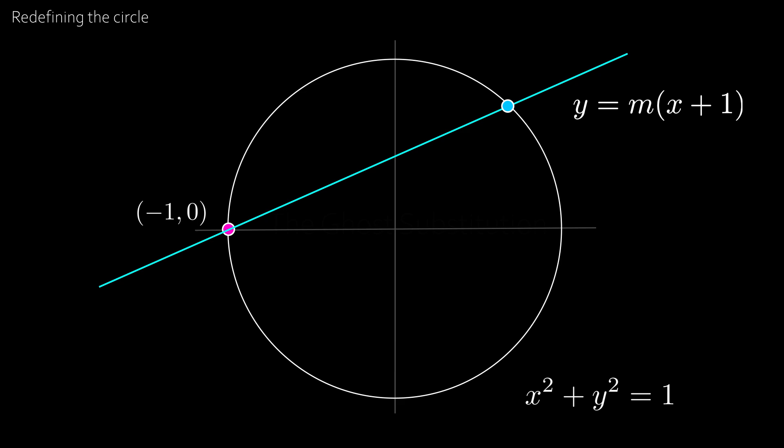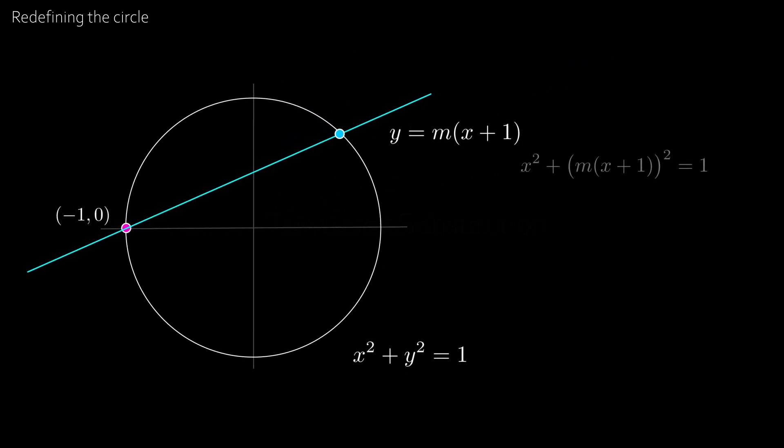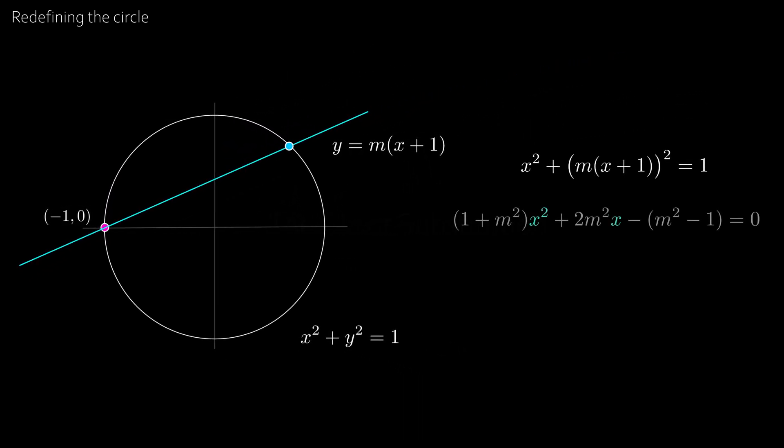And to find the intersection point, we can substitute in to our good old Cartesian equation, which gives us a standard quadratic equation with the solutions x equal to 1 minus m squared over 1 plus m squared,